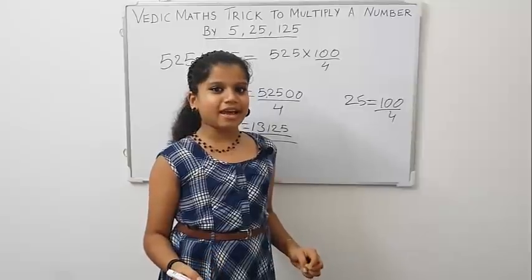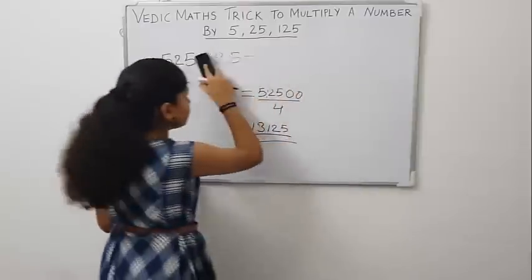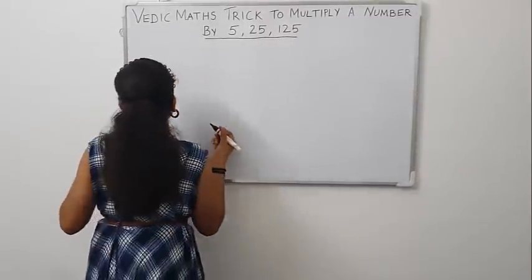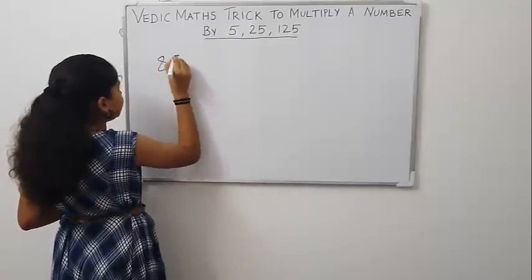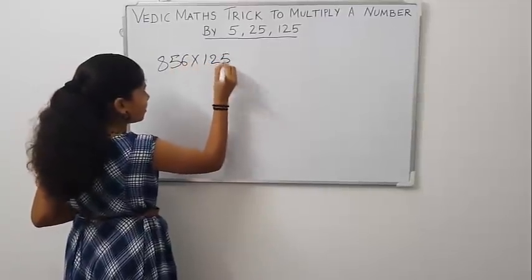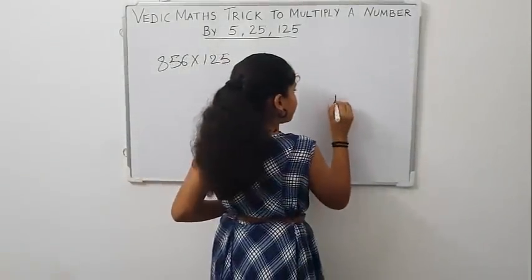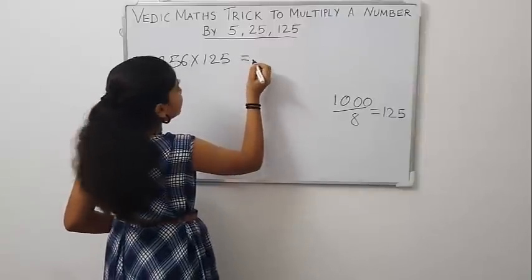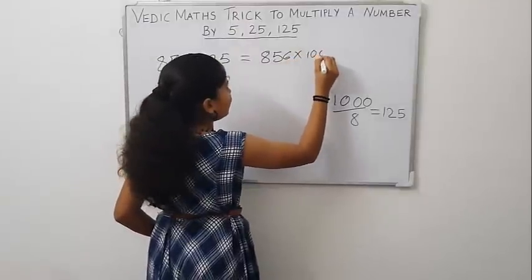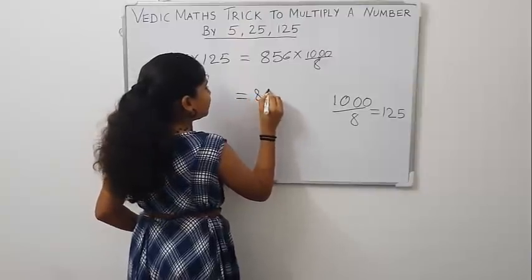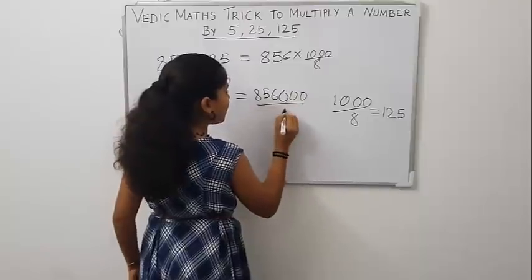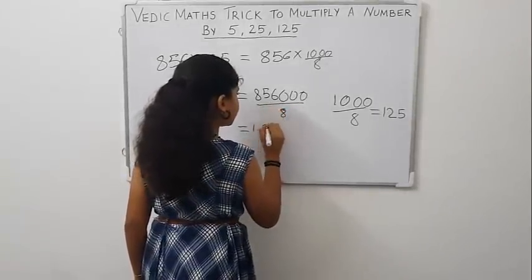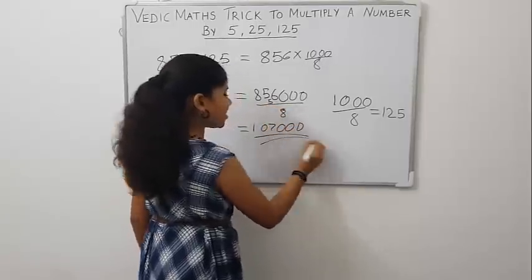Now, let us see how to multiply a number by 125. First, let us take 856 into 125. Friends, we know that 1000 by 8 is 125. So, write the question as 856 into 1000 by 8, 856000 by 8. Now, divide 856000 by 8. That is 107000. This is our answer.